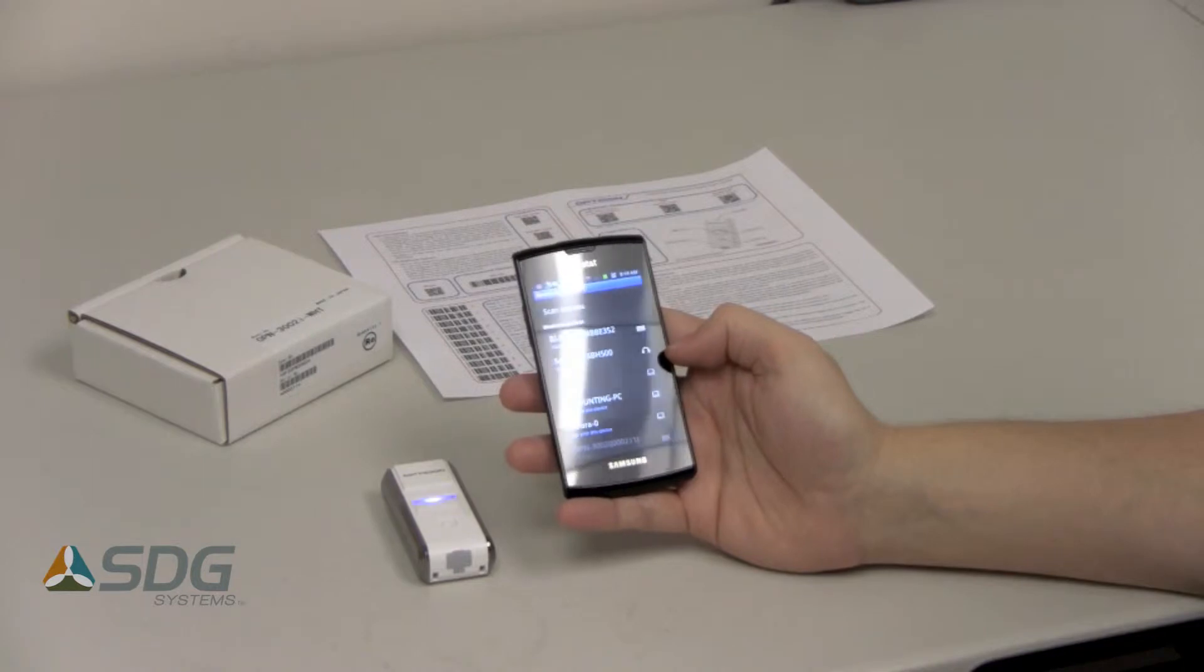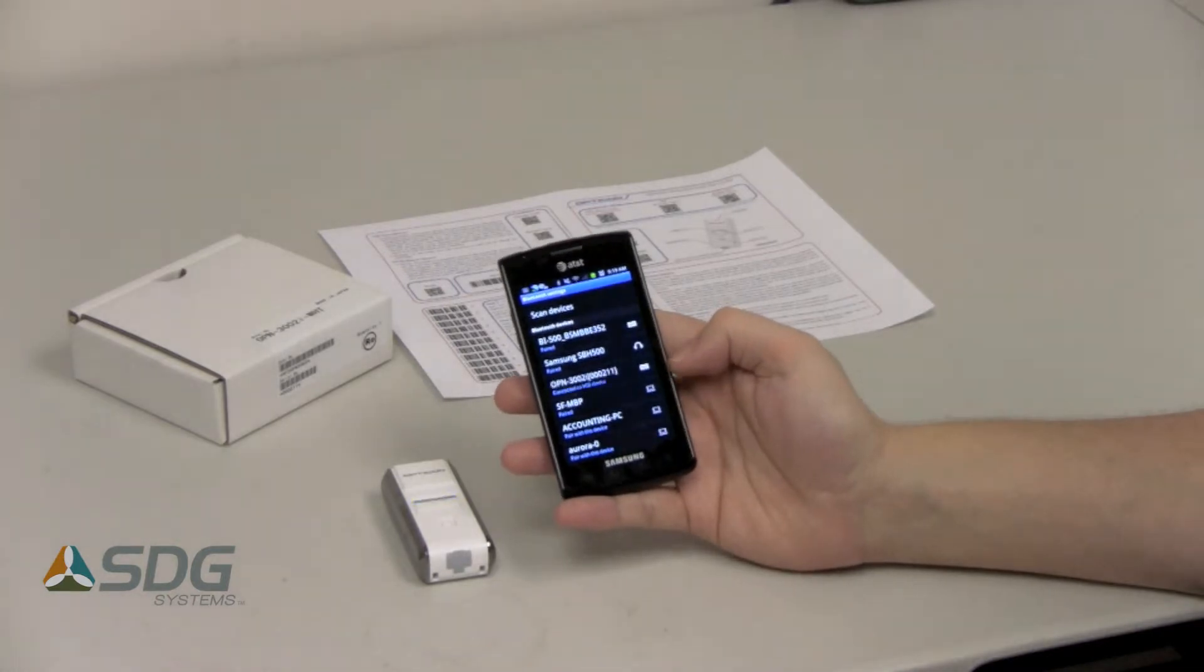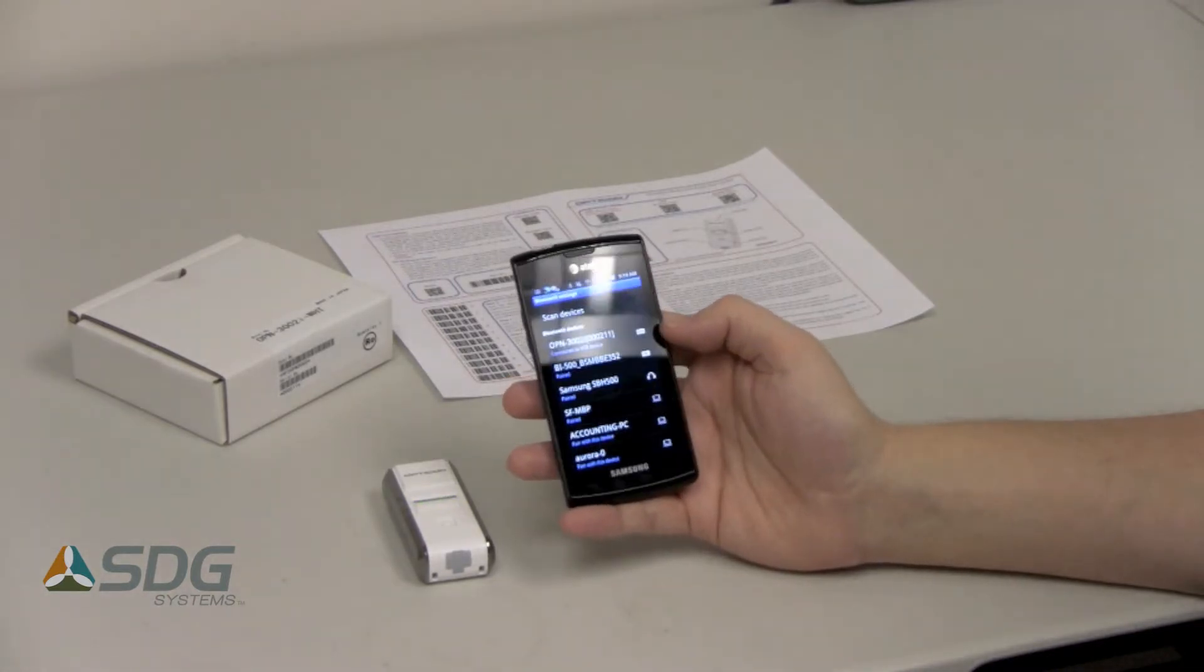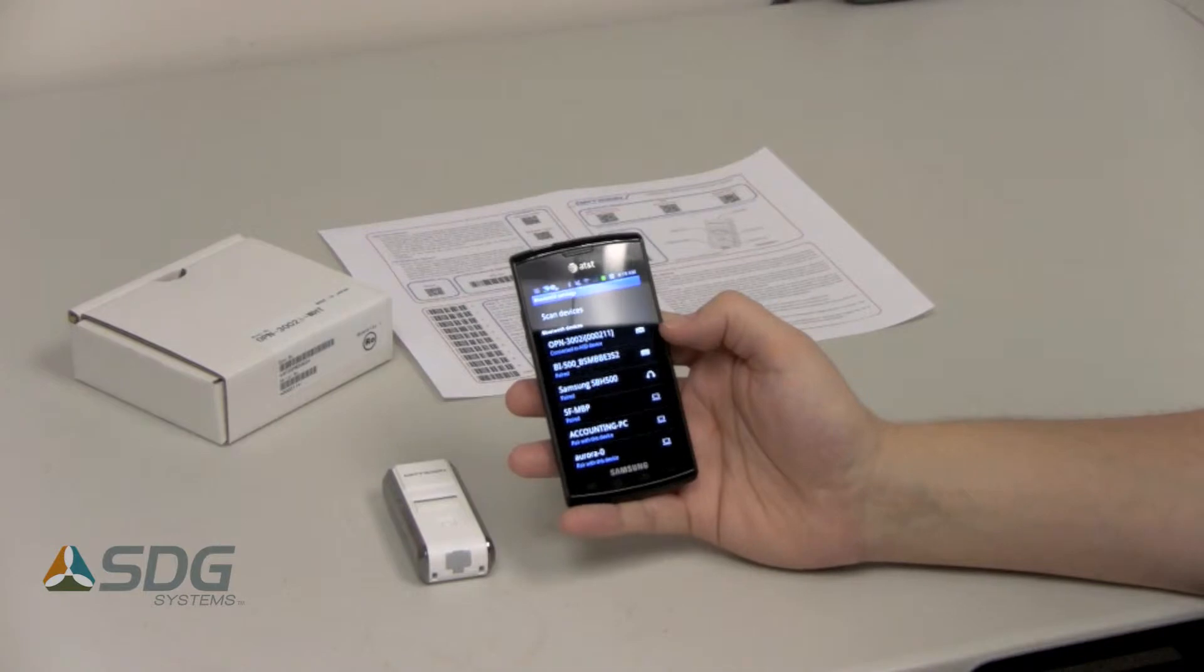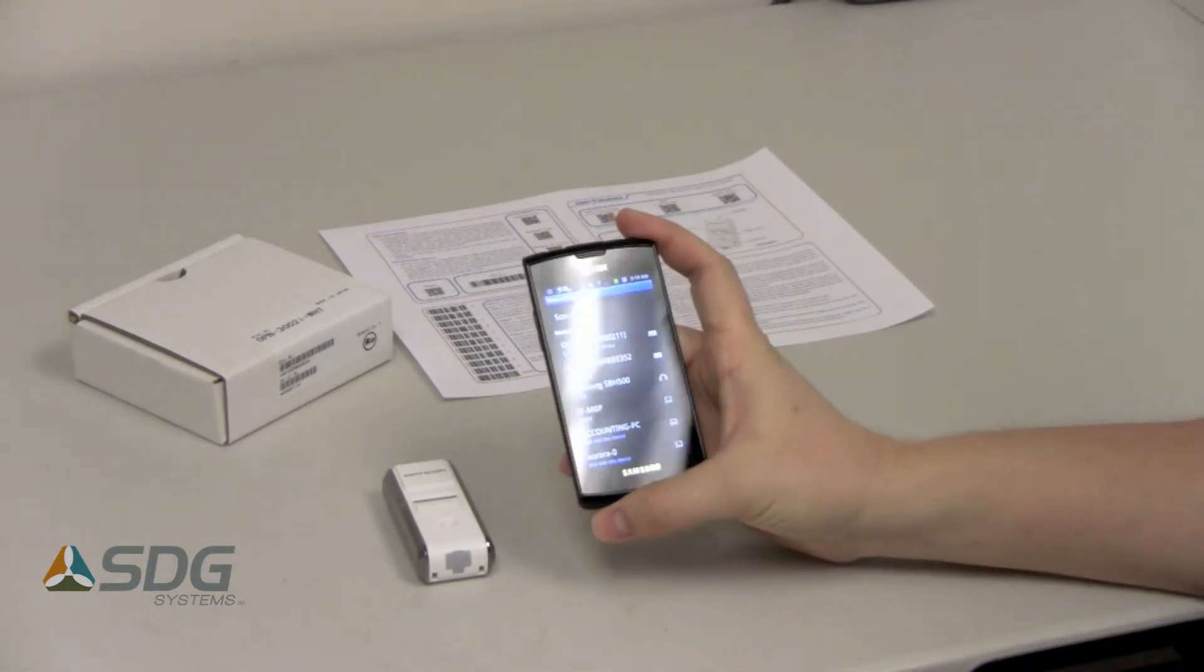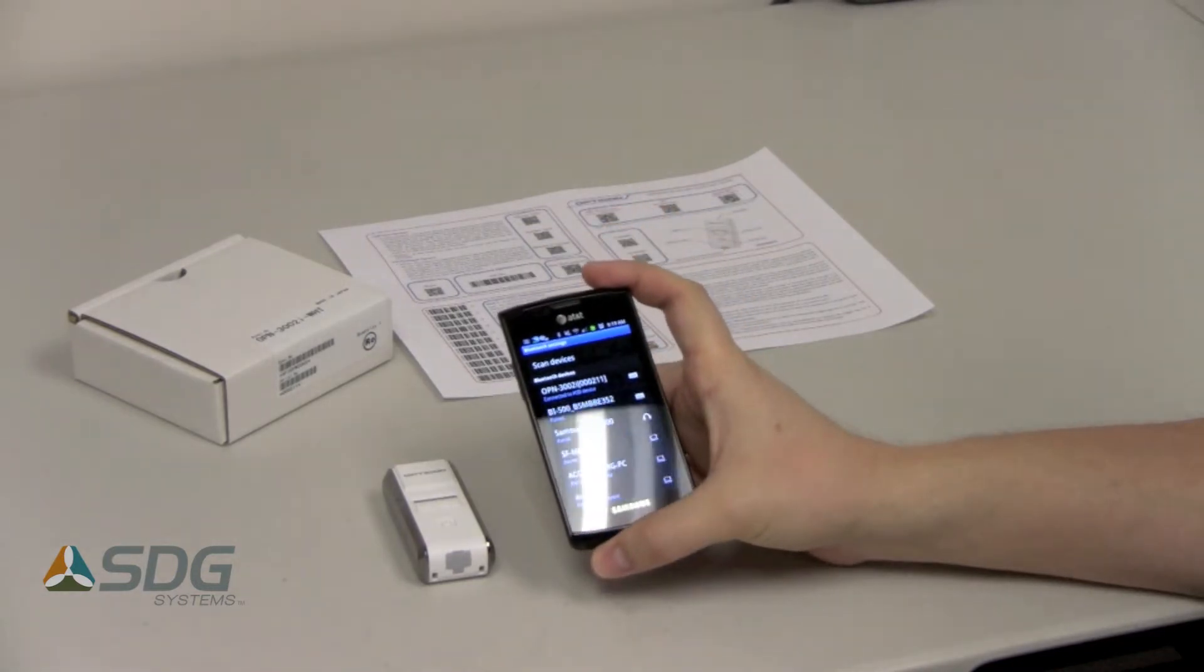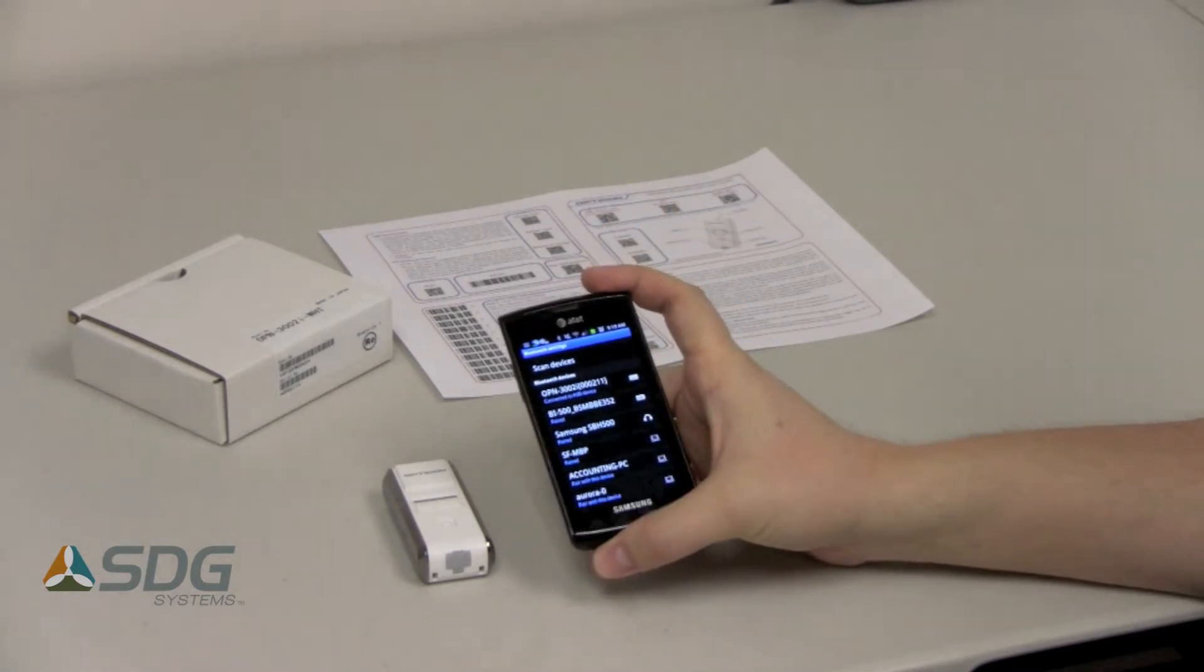And it should give us a confirmation beep shortly. Now I don't know if you can see the icon, but it shows up as a keyboard because it's in HID mode, human interface device. It also supports the SPP profile, serial port, and the Apple M5, made for iDevice profiles.